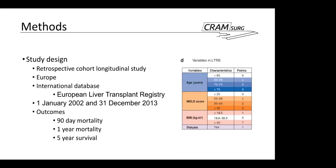This is a retrospective cohort study designed in Europe, adopting data from an international prospectively maintained database called the European Liver Transplant Registry — a dataset that has been around for quite a few years, now involving more than 170 institutions across pretty much the whole of Europe. Patients are included from 1st January 2002 to 31st December 2013, roughly the same time period used for the original LTRS paper. The outcomes specifically looked at are 90-day mortality, one-year mortality, and five-year survival.